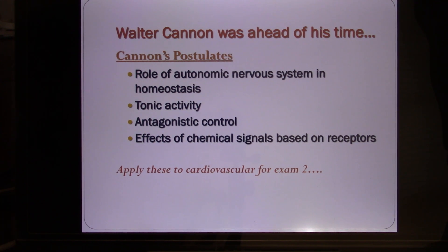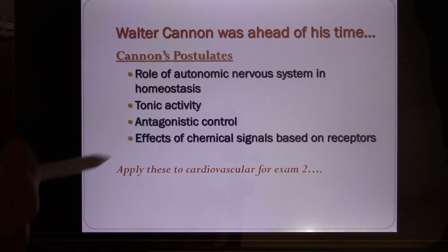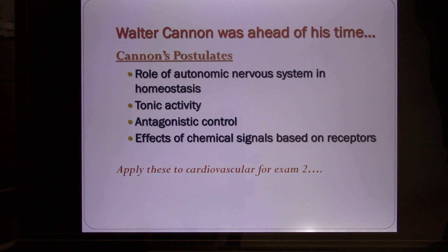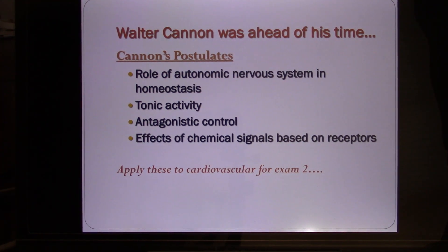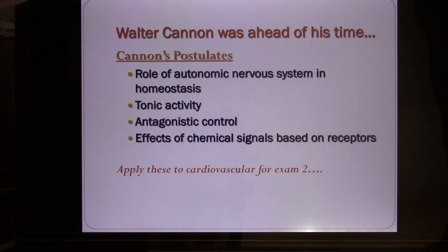We know it's correct because we have the autonomic nervous system, which includes the sympathetic and parasympathetic nervous systems. When your sympathetic nervous system is activated, it increases your heart rate. When your parasympathetic nervous system is activated, it decreases your heart rate — that's antagonistic control. The target knows which one to respond to based on the chemical signal and the receptor. That's why the sympathetic and parasympathetic use different receptors. That's what Cannon predicted 100 years ago, and after 100 years we still know it's correct — that's why he's the father of physiology.